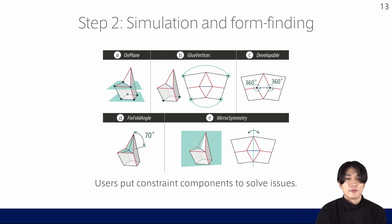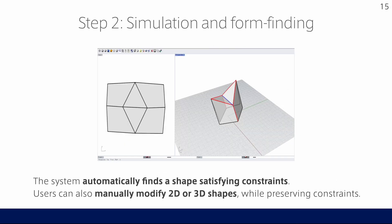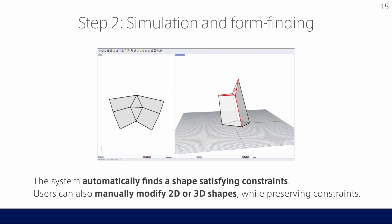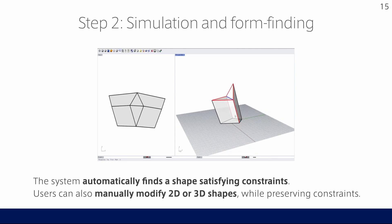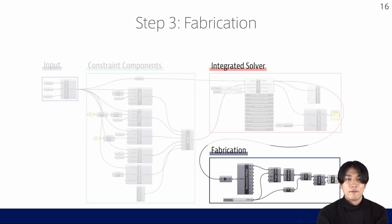For example, the on-plane component restricts the selected vertices on the same plane. The user can also choose other constraints from the visual components in Crane's UI. These constraints are connected to a solver component for the form-finding. Based on the constraint components, the system automatically finds a new shape. Even after form-finding, the user can also manually modify the shape by grabbing vertices, and the system updates a new shape under the constraints.